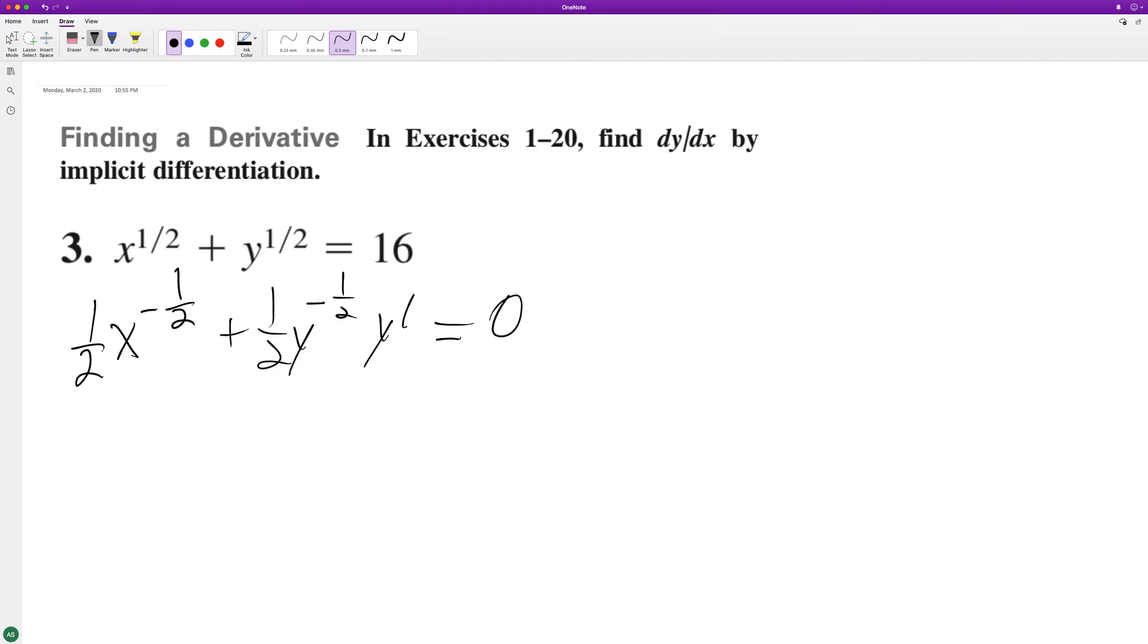So get y prime by itself. First off, we'll have 1/2 y raised to negative 1/2 times y prime equals negative 1/2 x raised to negative 1/2. Then divide both sides by 1/2 y raised to negative 1/2, so y prime is equal to...